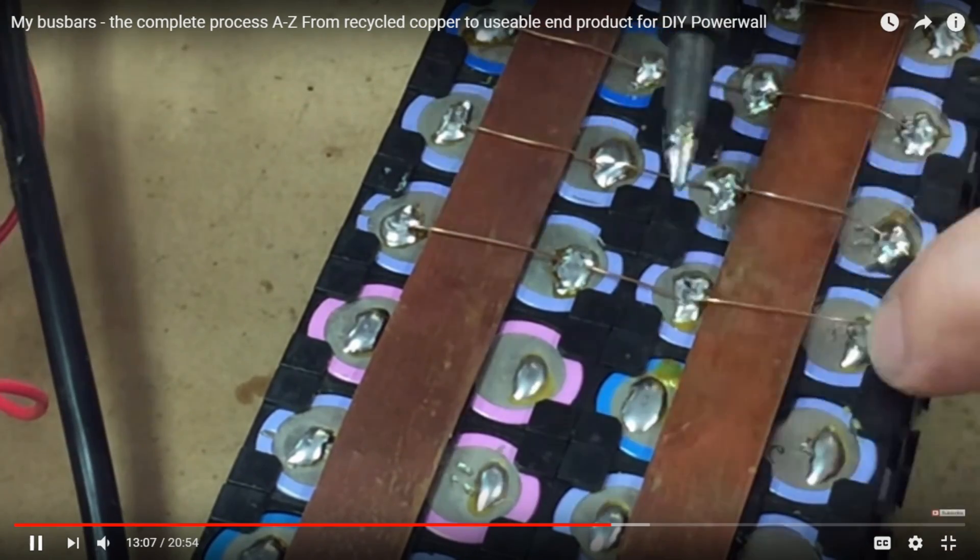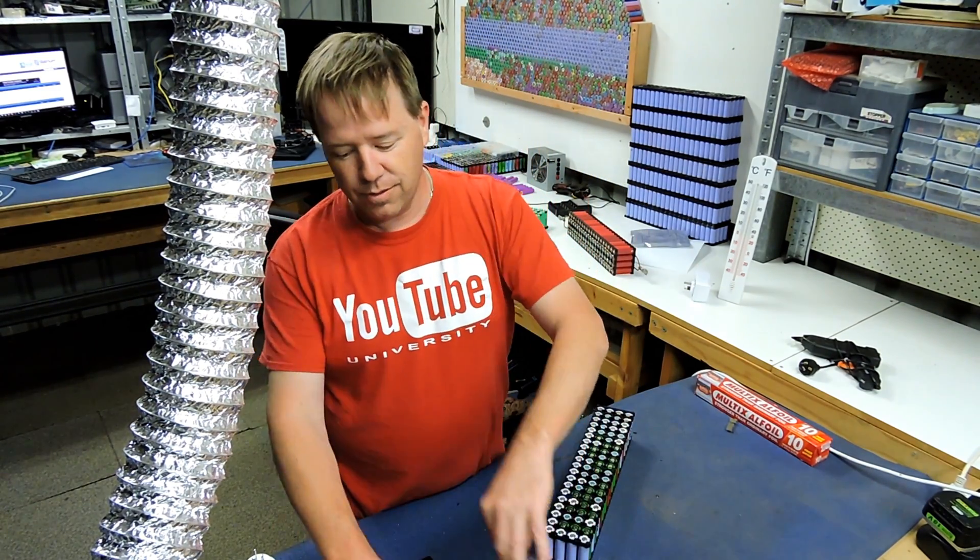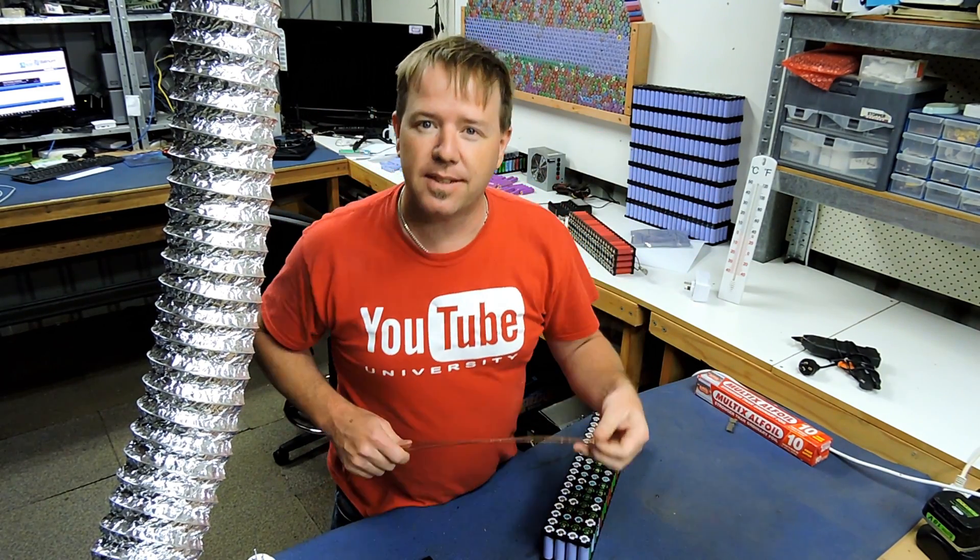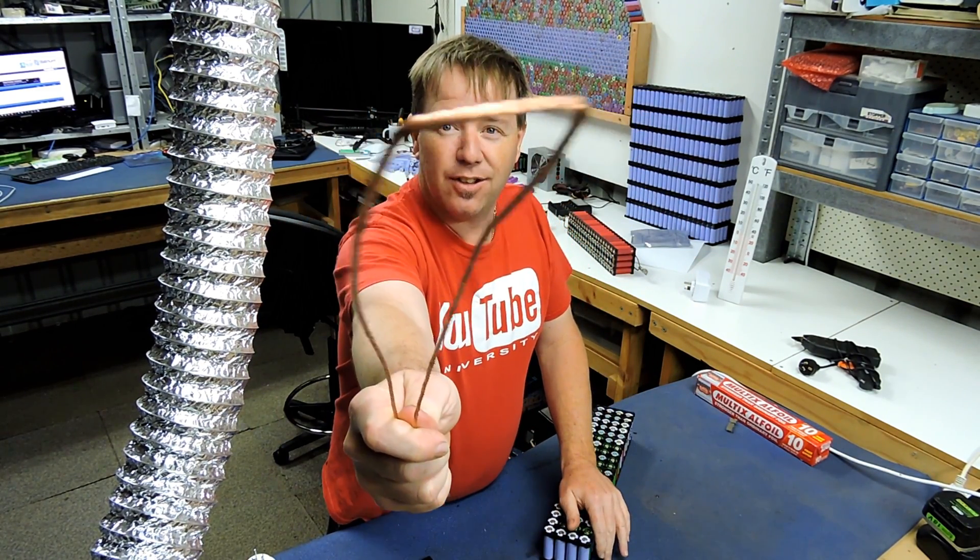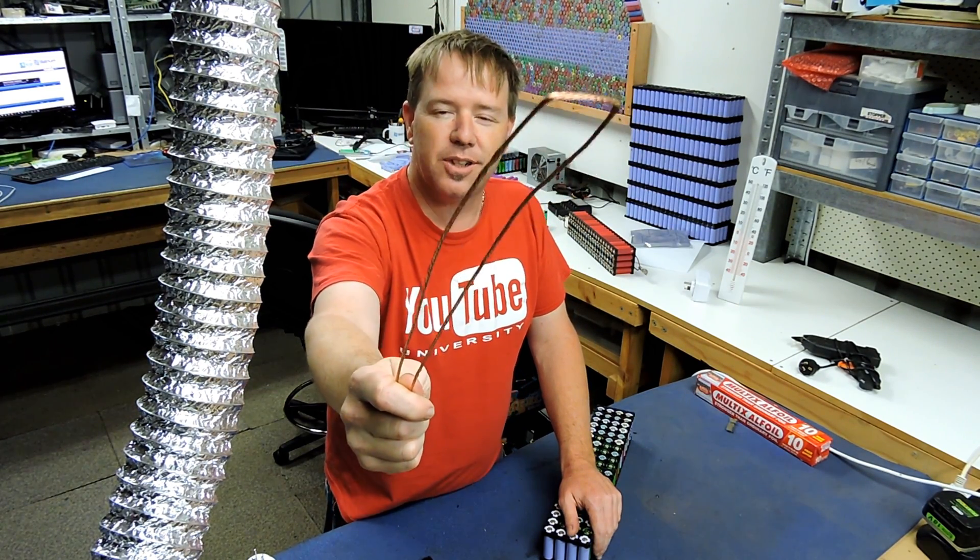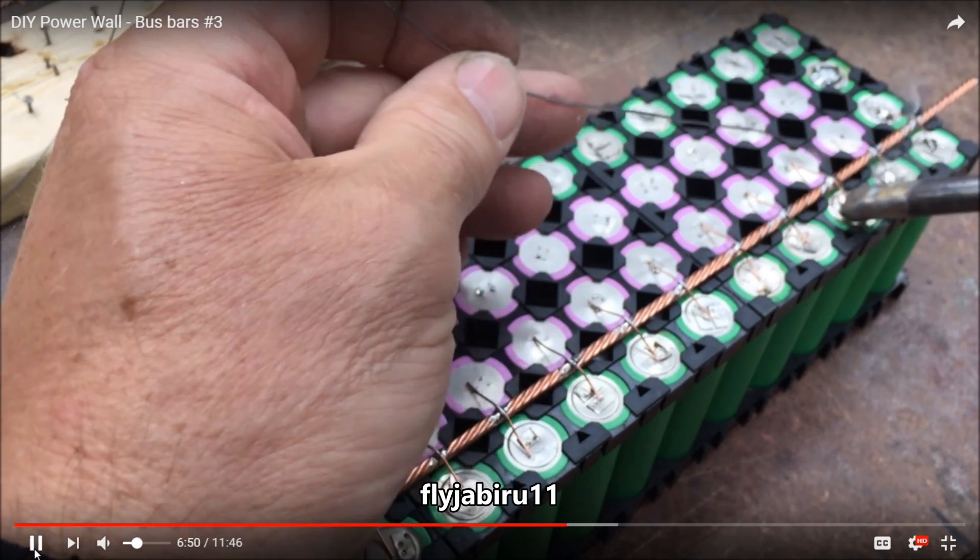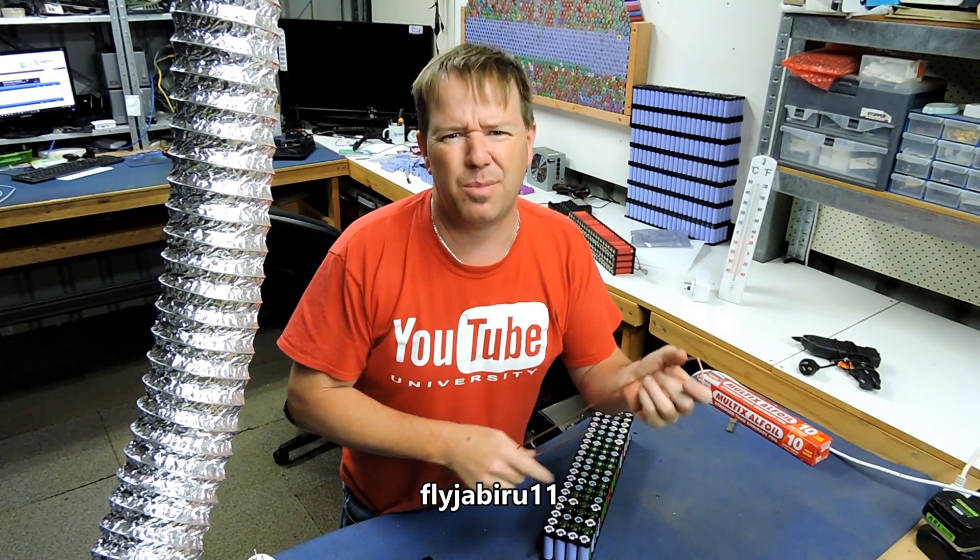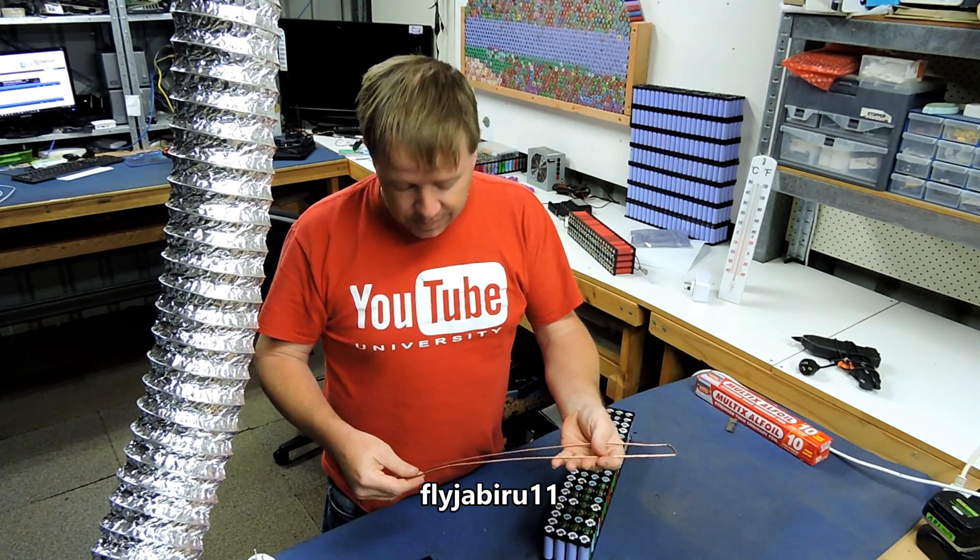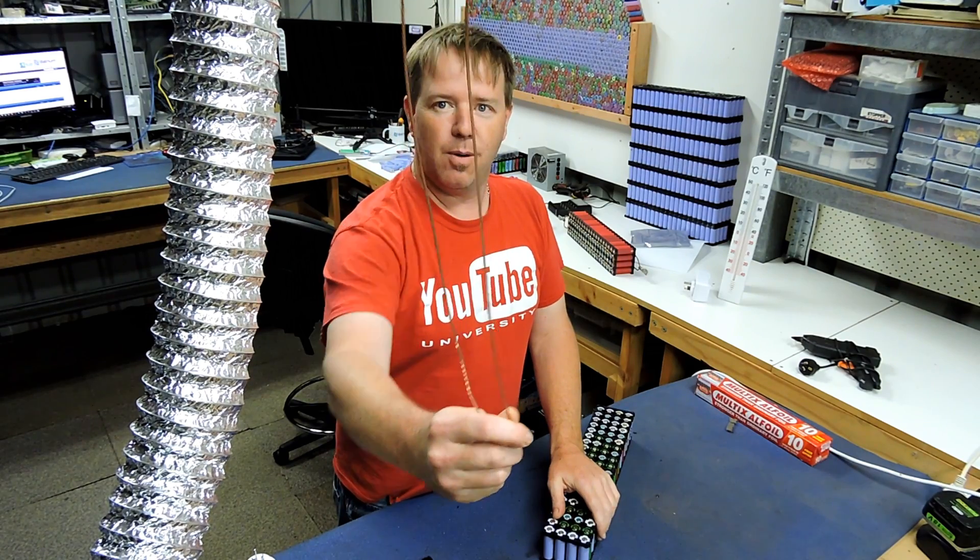Or we could do my bus bar way, which is just copper strips cut up, soldered on, and away you go. You could do spot welding, or you can do what has become the most acceptable method: getting house power cable, stripping it out, getting the copper out, whacking it in your drill. Fly Jabbery was the first one I saw do that. Link will be somewhere, probably below.